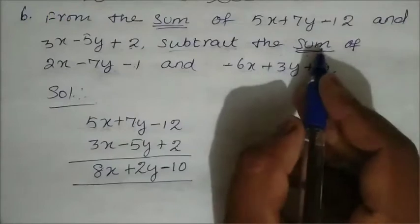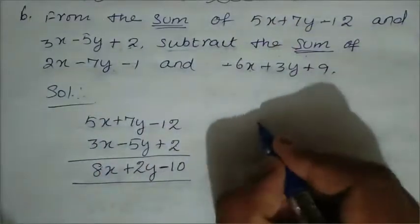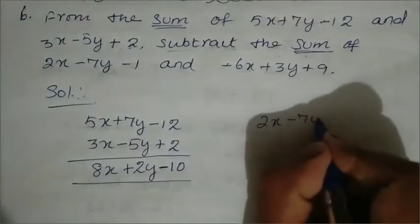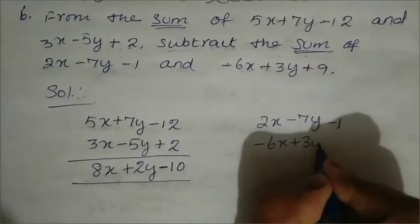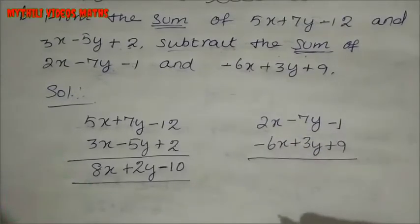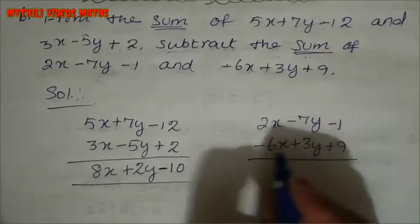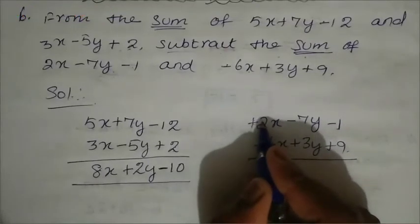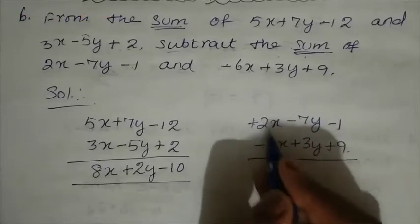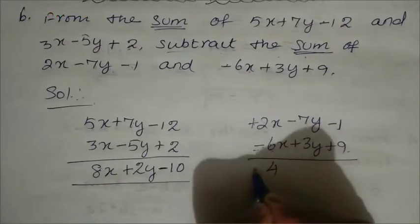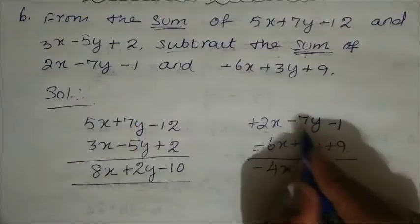Now we add the second pair of algebraic expressions: 2x minus 7y minus 1, and minus 6x plus 3y plus 9. For the x terms: plus 2 and minus 6 — different symbols, so 6 minus 2 is 4, bigger number is negative, so minus 4x. For y terms: minus 7 and plus 3 — different symbols, 7 minus 3 is 4, bigger number is negative, so minus 4y.